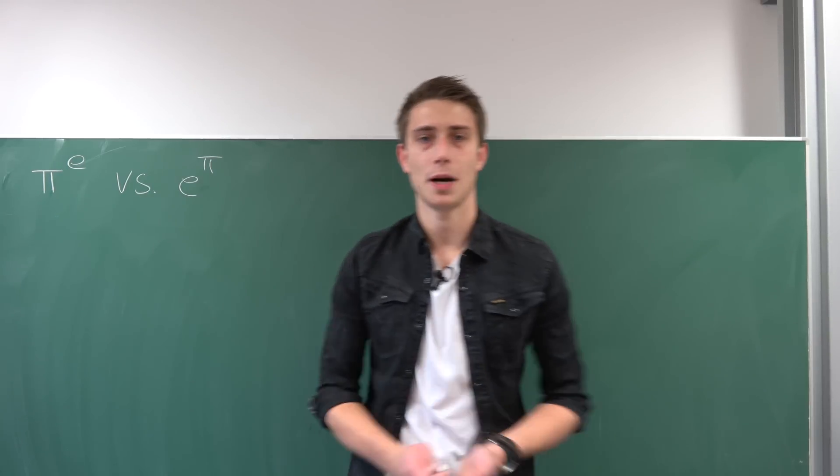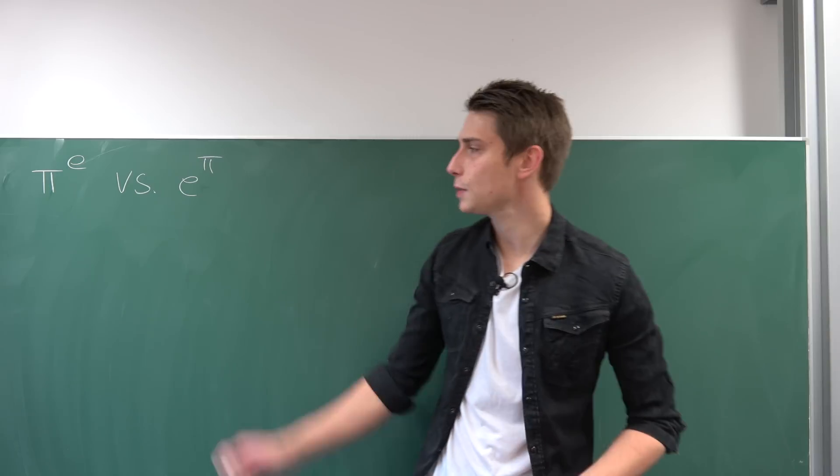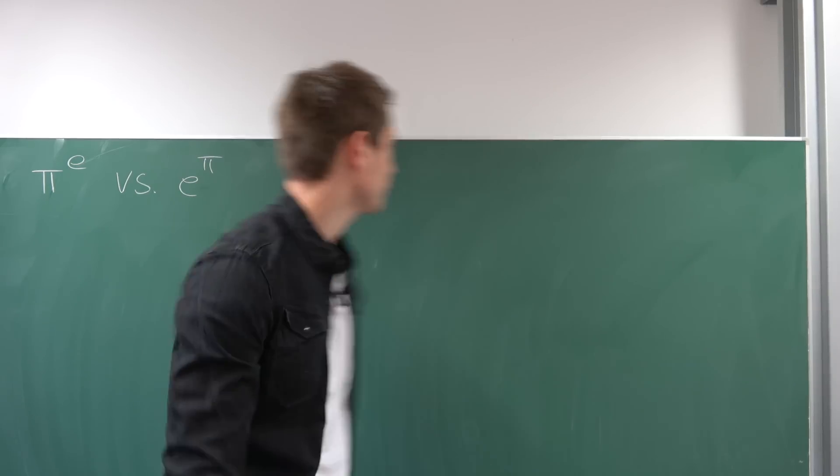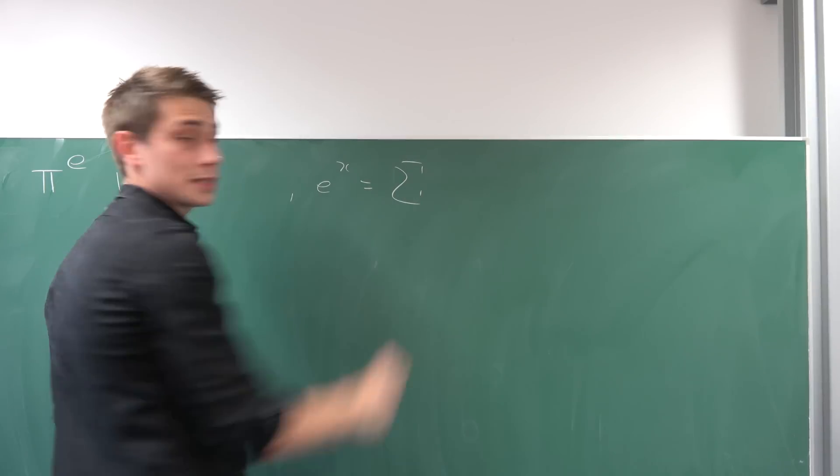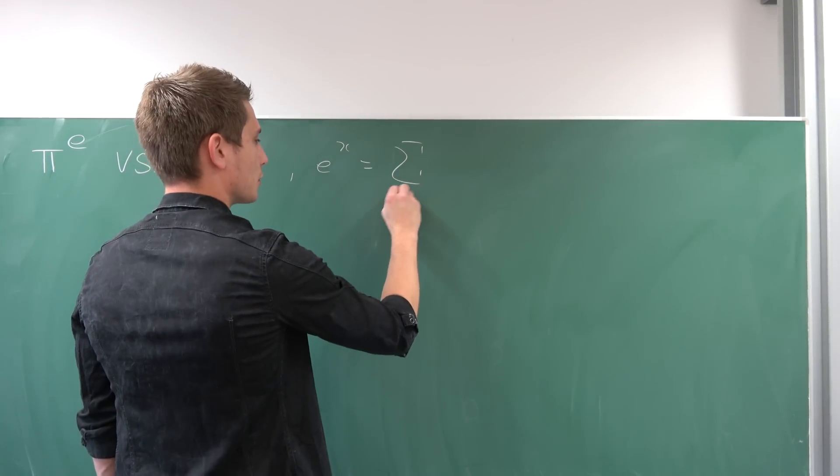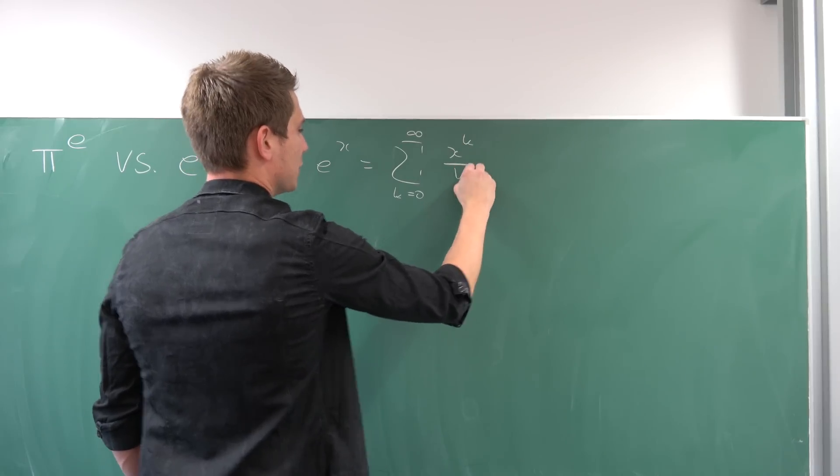We want to compare π to e^π. And our main tool for today is going to be one of the many definitions of the exponential function. Namely, e^x is nothing but its Taylor series expansion at zero. So the sum from k equals zero to infinity of x^k over k factorial.